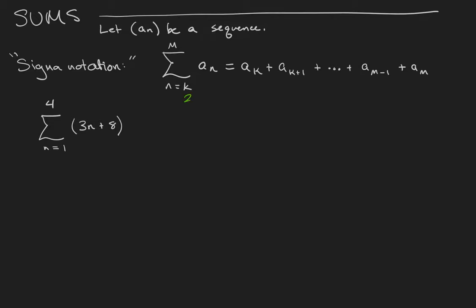This notation says that the sum from k to m of the an's is equal to ak plus ak plus 1 plus etc. plus am minus 1 up to am. k and m are the lower and upper bounds of the sum respectively.